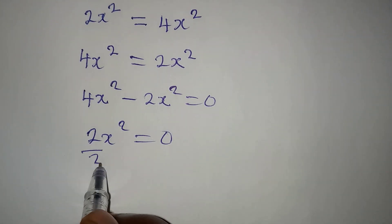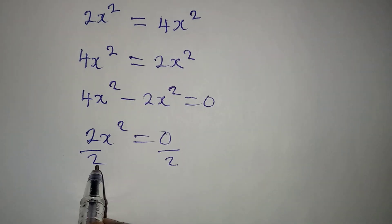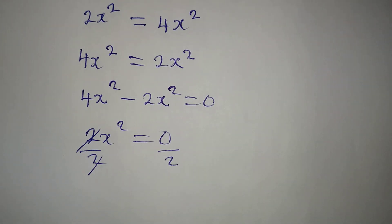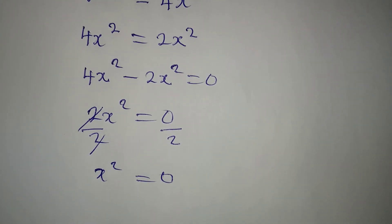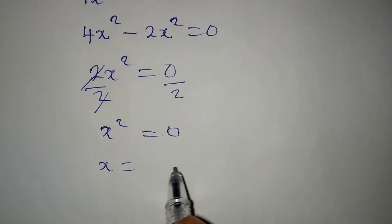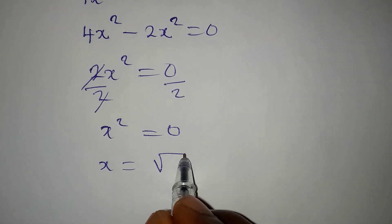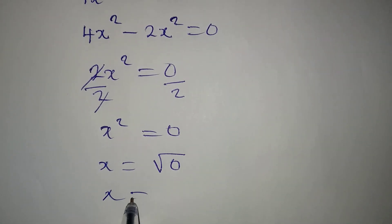We divide both sides by 2. This will give us x² = 0. Then x will be the square root of 0, and x = 0.